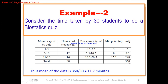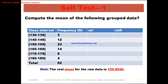We obtain a total sum of 315. So the mean of the students' time taken to finish the quiz is 315 divided by 30, which is 11.7 minutes. This is the average time.